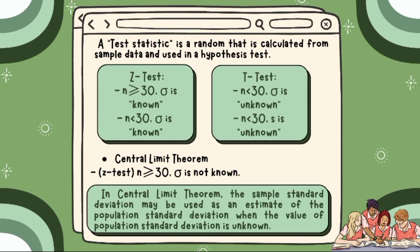A test statistic is a random variable that is calculated from sample data and used in a hypothesis test. We'll use a z-test if the sample size is greater than or equal to 30 and the population standard deviation is known. Also if the sample size is less than 30 and the population standard deviation is known.